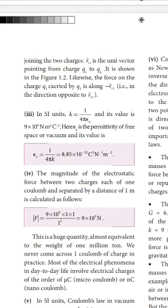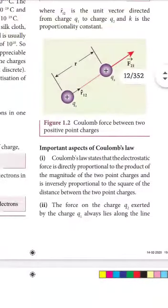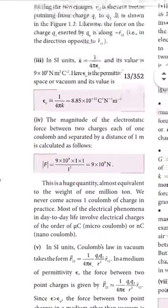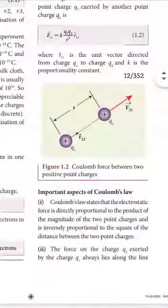The fourth point discusses the magnitude of the electrostatic force between two charges, each of one coulomb, separated by a distance of one meter. Using equation 1.2, if q1 equals one coulomb, q2 equals one coulomb, and r equals one meter, we can calculate the force between them using the Coulomb's Law formula.